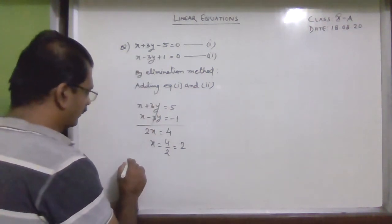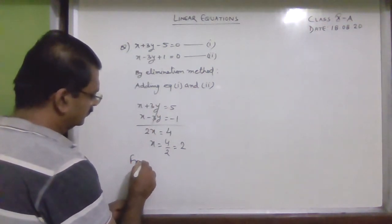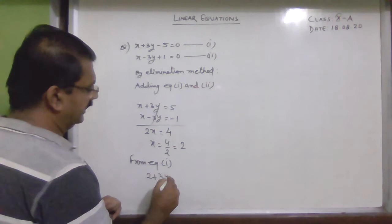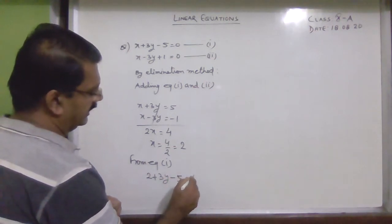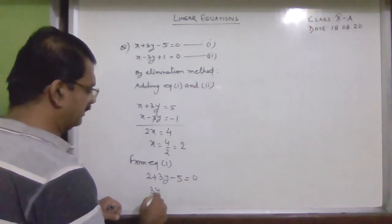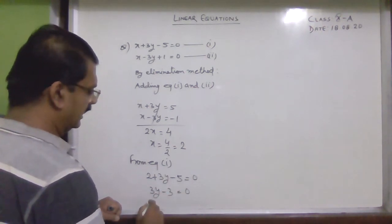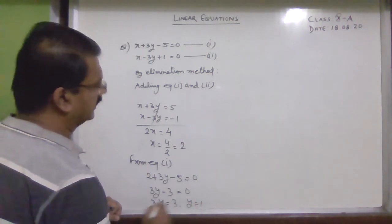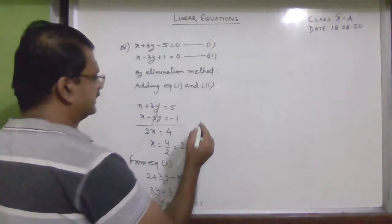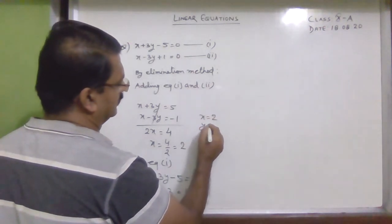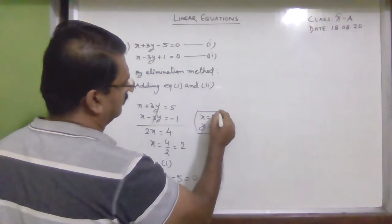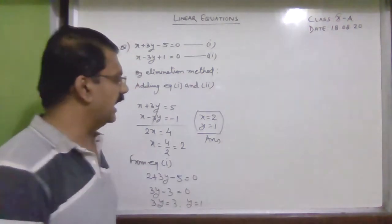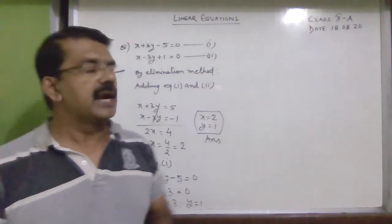We have found that x = 2. Now substitute the value of x into equation 1: 2 + 3y − 5 = 0, which gives 3y − 3 = 0, so 3y = 3, therefore y = 1. So x = 2 and y = 1 is the answer by the algebraic method.